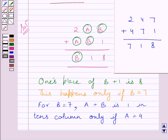Now clearly you can see 247 plus 471 is 718. 7 plus 1 is 8. One's place of 4 plus 7 is 1, and tens place of 4 plus 7 is also 1. So 1 is carry in hundreds column.